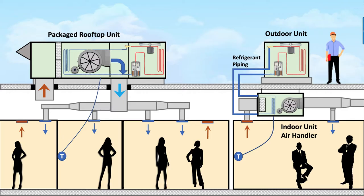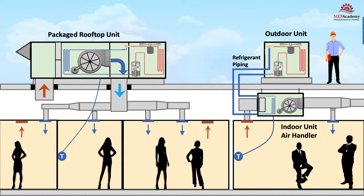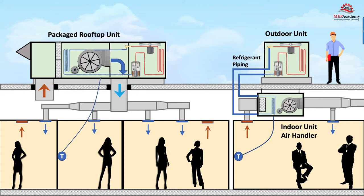HVAC split systems are convenient to use with existing buildings because it's much easier to route small refrigerant piping to the indoor coil than to run much larger air ducts using a rooftop package unit. As you can see, the rooftop unit needs large openings for the supply and return ducts to enter the building. The split system uses smaller copper tubing and requires a small opening in the roof or wall.